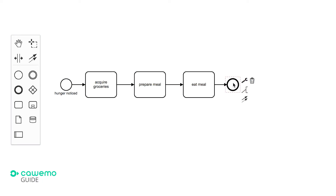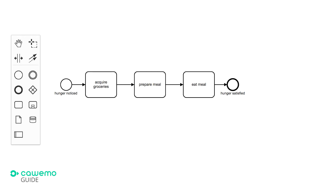The end event is the circle with the thicker line. Do you remember our original process goal? Exactly — to satisfy our hunger. Did you know that BPMN usually starts on the left and moves to the right? The arrows connecting our symbols are called sequence flows. The easiest way to understand the flow of this process is to imagine a token that moves from symbol to symbol. The process starts with our start event, hunger noticed.